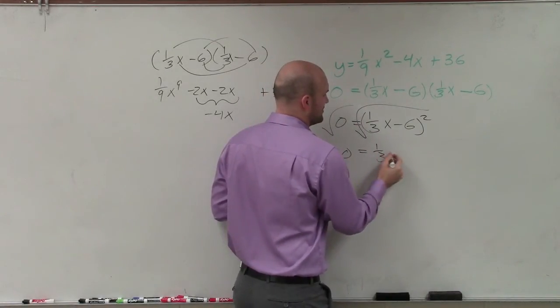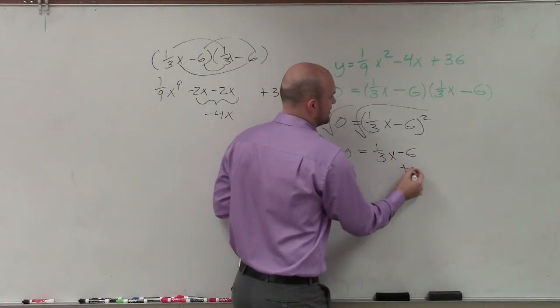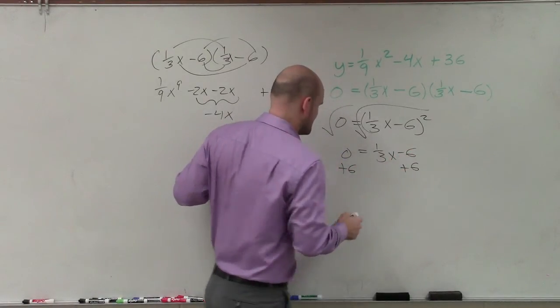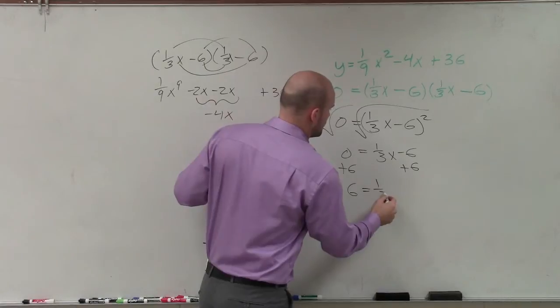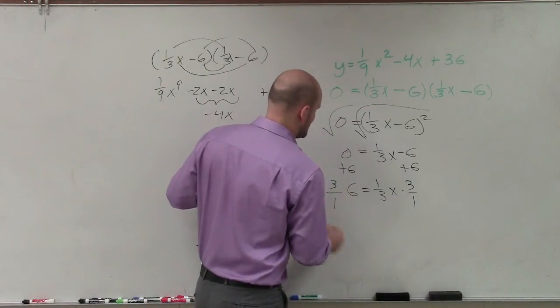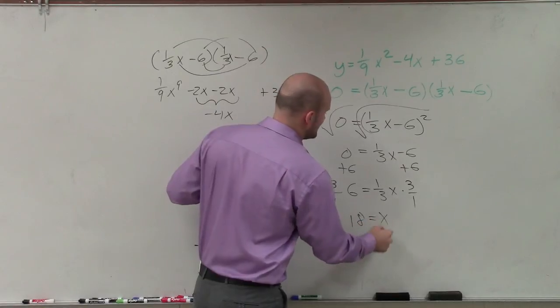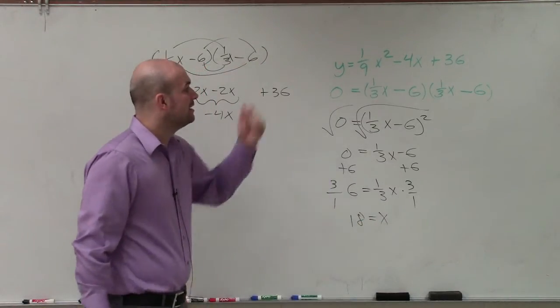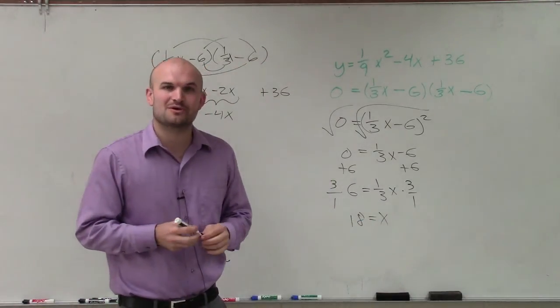So therefore, that's (1/3)x minus 6 equals zero. Add 6 to both sides. Then I have 6 equals (1/3)x. Multiply by 3 over 1, the reciprocal, on both sides. Therefore, I get 18 equals x as our solution to this perfect square trinomial. Thanks.